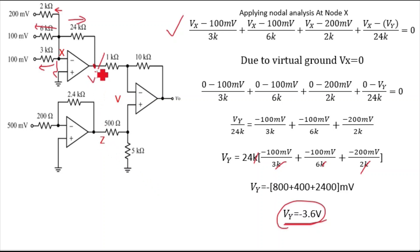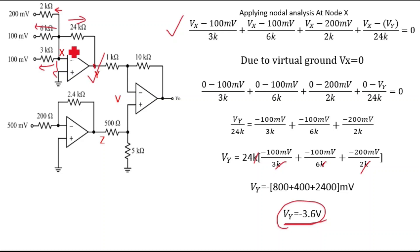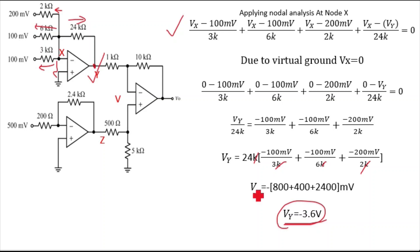You can also use the summing amplifier formula directly: VY = −RF × (V1/R1 + V2/R2 + V3/R3). Applying this formula gives VY = −3.6 volts. So whether you use nodal analysis or the summing amplifier formula, you get the same result.